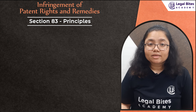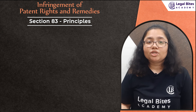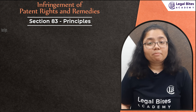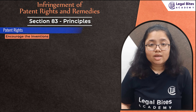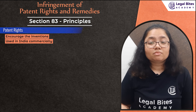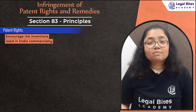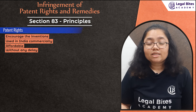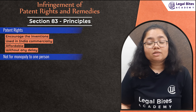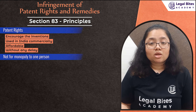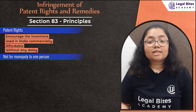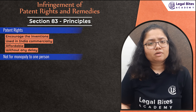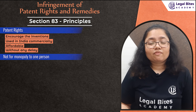Section 83 sets out some common principles to remember when using patented inventions. The main reason for giving patent rights is to encourage inventions and to make sure that the same are used in India commercially. They must be reasonable — that is, fairly and affordably used in India without any delay. It is not just for the sake of monopoly so that one person or entity can use it. Monopoly is where the entire supply is in the hands of one person and this would cause severe arbitrary use and hamper the benefit of society.